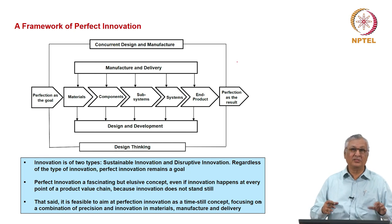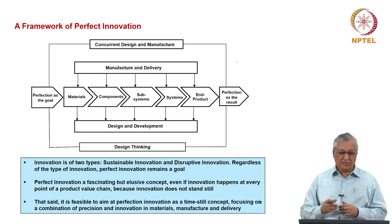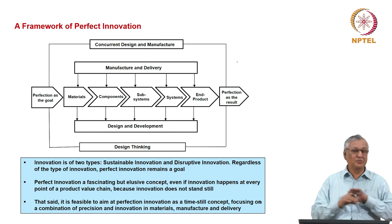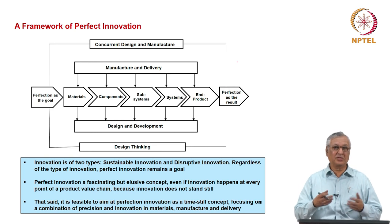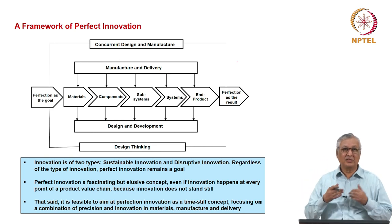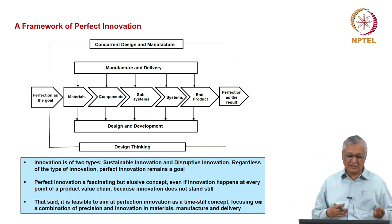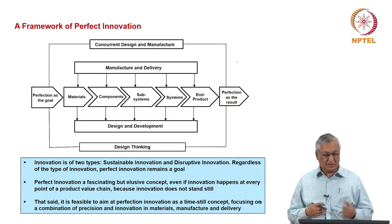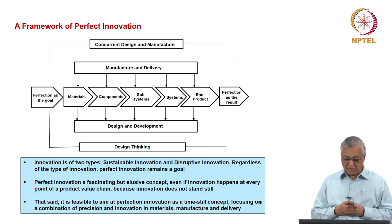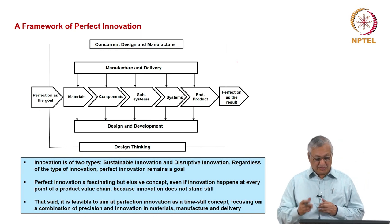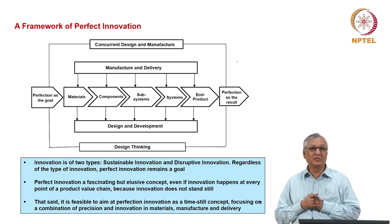But for that to happen as a value chain, as a regular industrial activity, you also need concurrent design and manufacture. So, you have a value chain which should be understood in totality — you should have design and development ability which brings out those kinds of components and the end product, and a manufacturing and delivery system which operates by adopting two philosophies simultaneously: one is design thinking and the other is concurrent design and manufacture. Perfect innovation is a very fascinating and elusive concept, because innovation does not stand still.